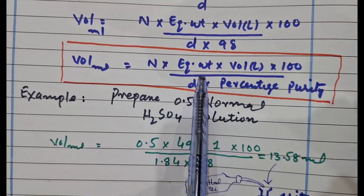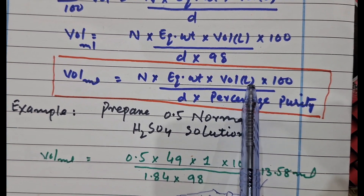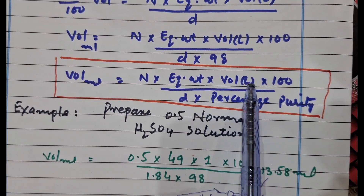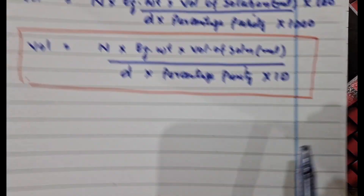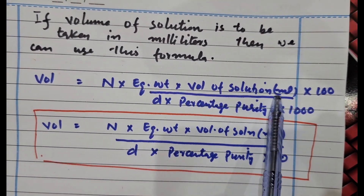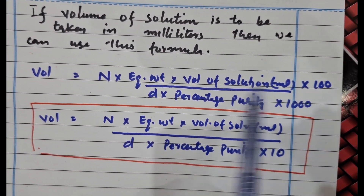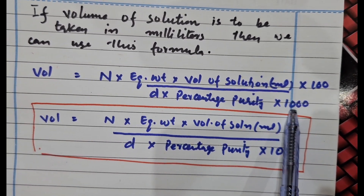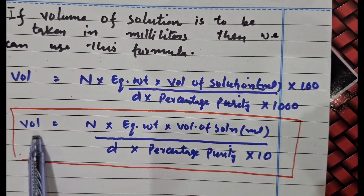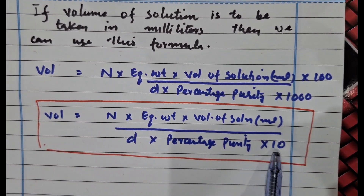One more version of this equation: if you are preparing your solution in ml rather than liters, you can use ml but divide by 1000 to convert to liters. So volume equals normality into equivalent weight into volume of solution in ml, into 100, divided by density into percentage purity into 1000. The 1000 and 100 simplify, leaving 10 in the denominator. The final equation is: volume equals normality into equivalent weight into volume of solution in ml, divided by density into percentage purity into 10.